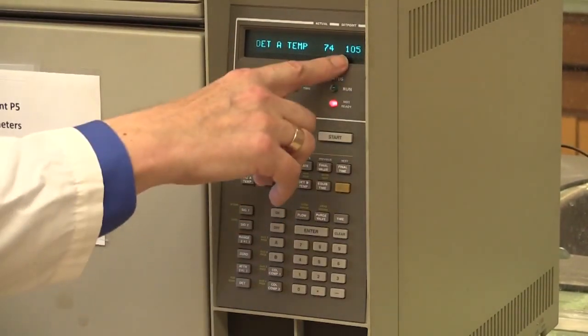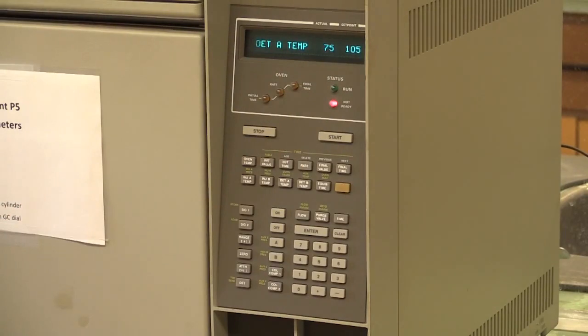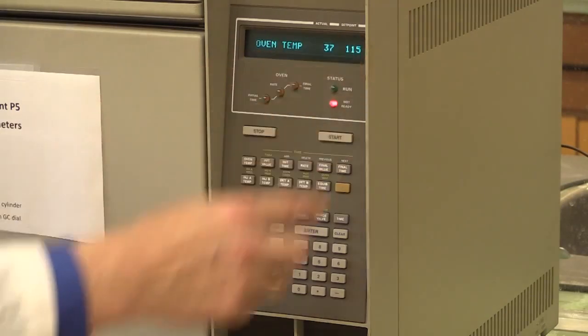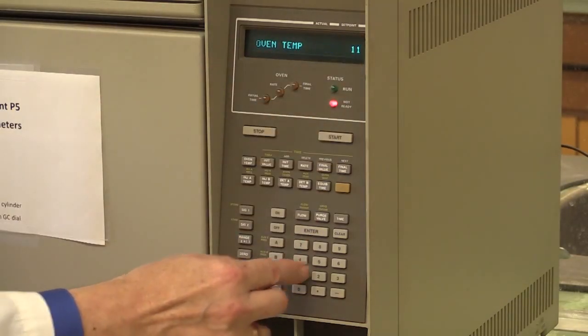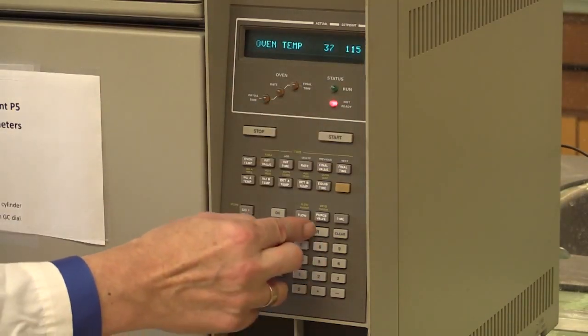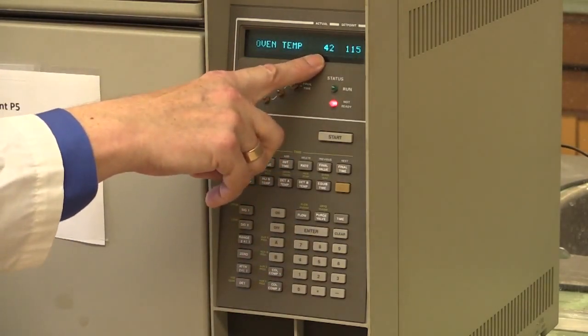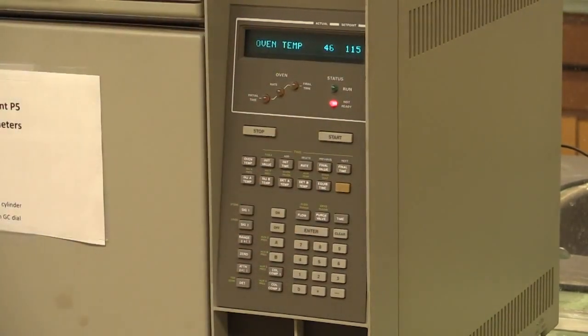The detector is set to 105. It's climbing up from 75 now. The oven temperature is off at the moment, so we set 115, enter. So we've got that temperature, and it's now heating up 40 degrees, 42. So by the time we come to inject, all of this will have equilibrated.